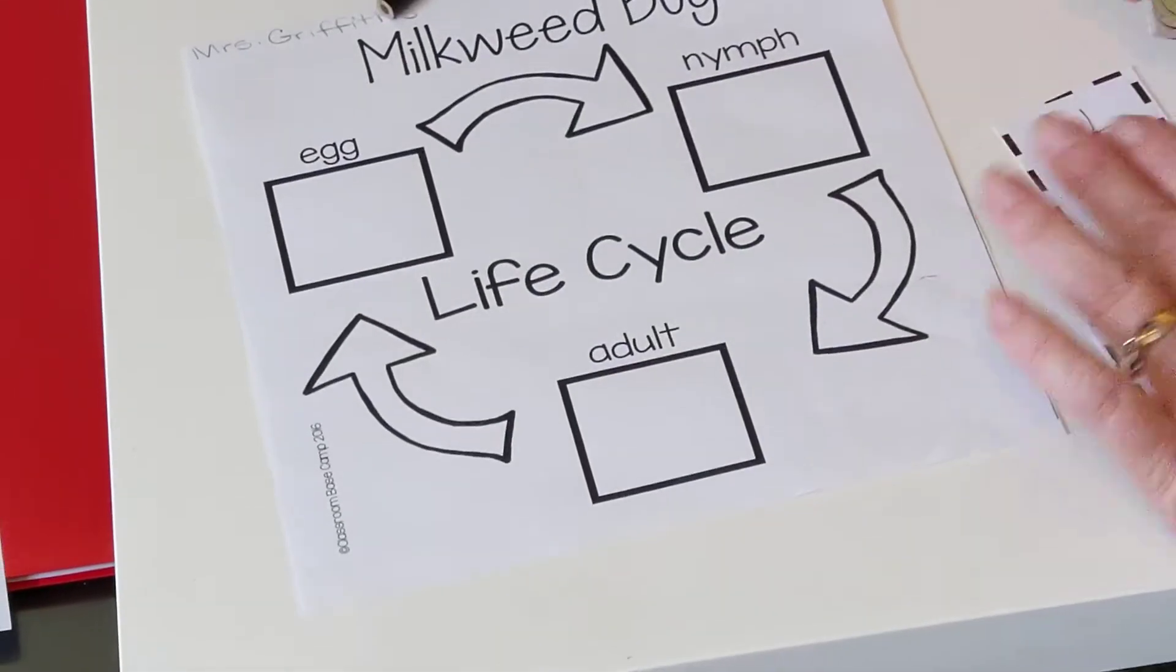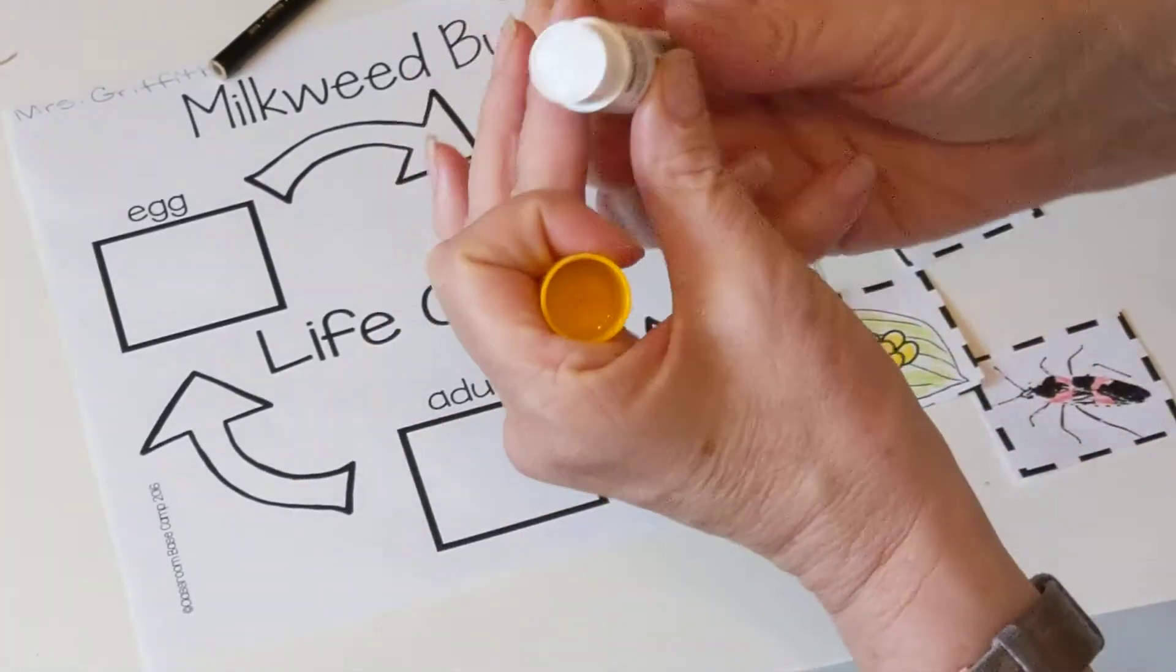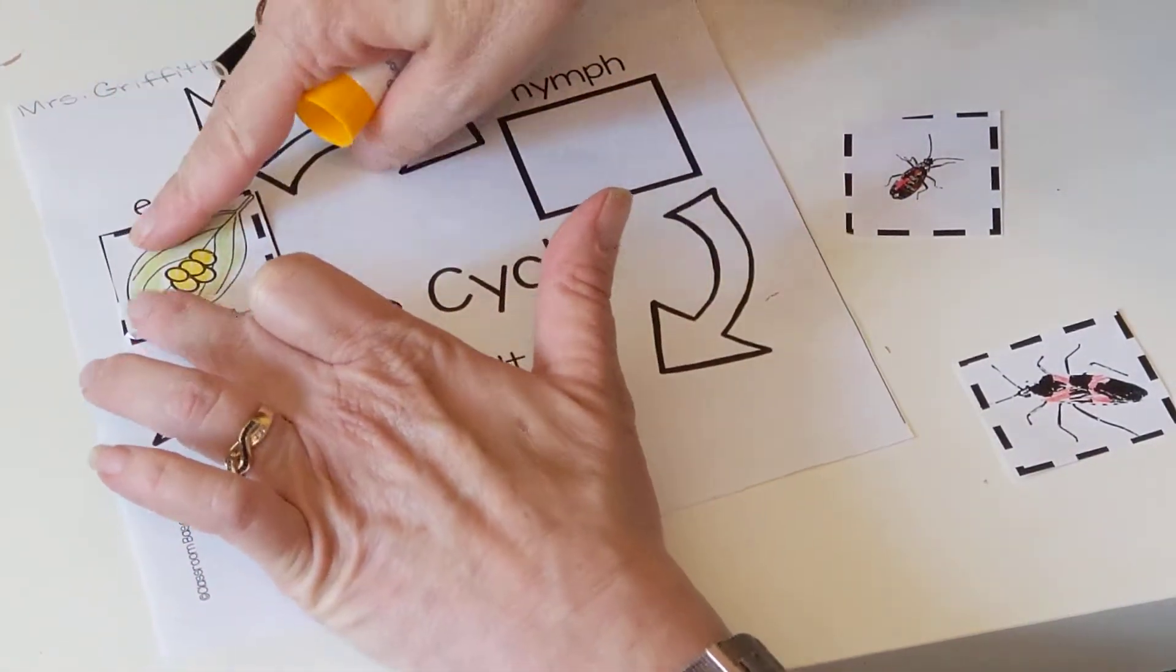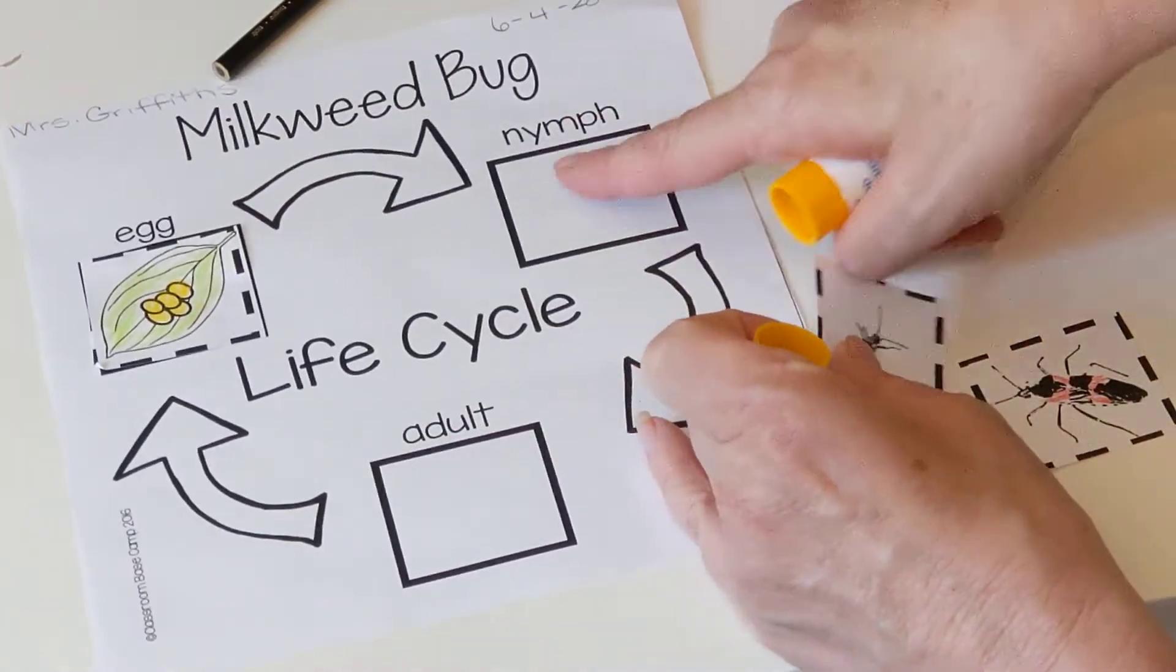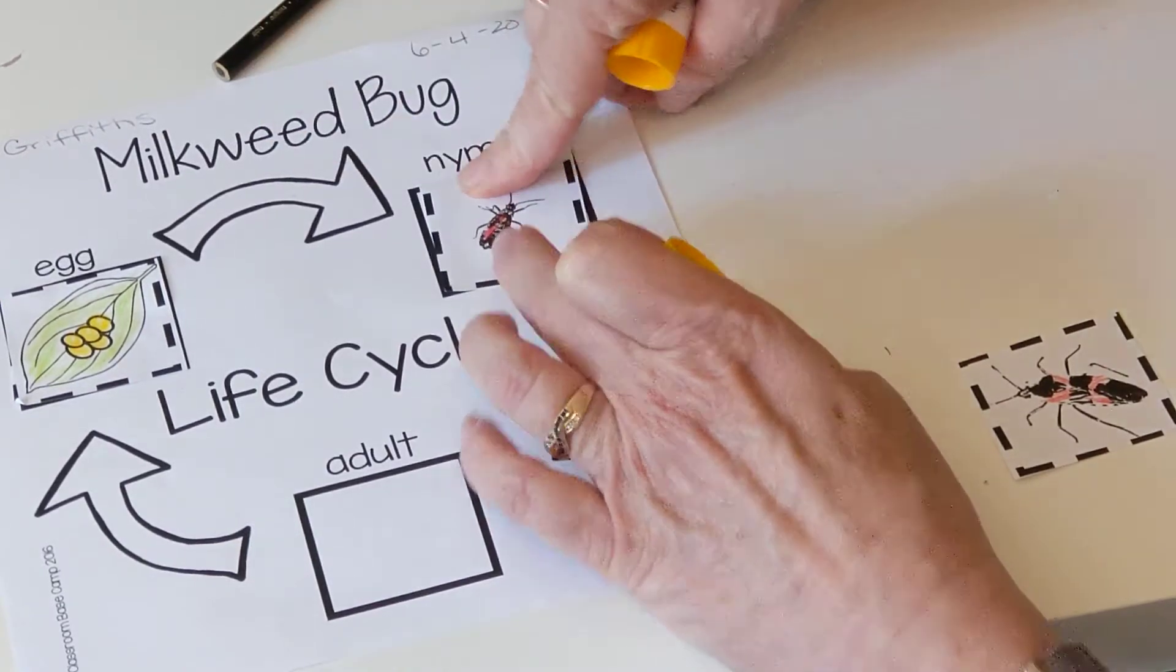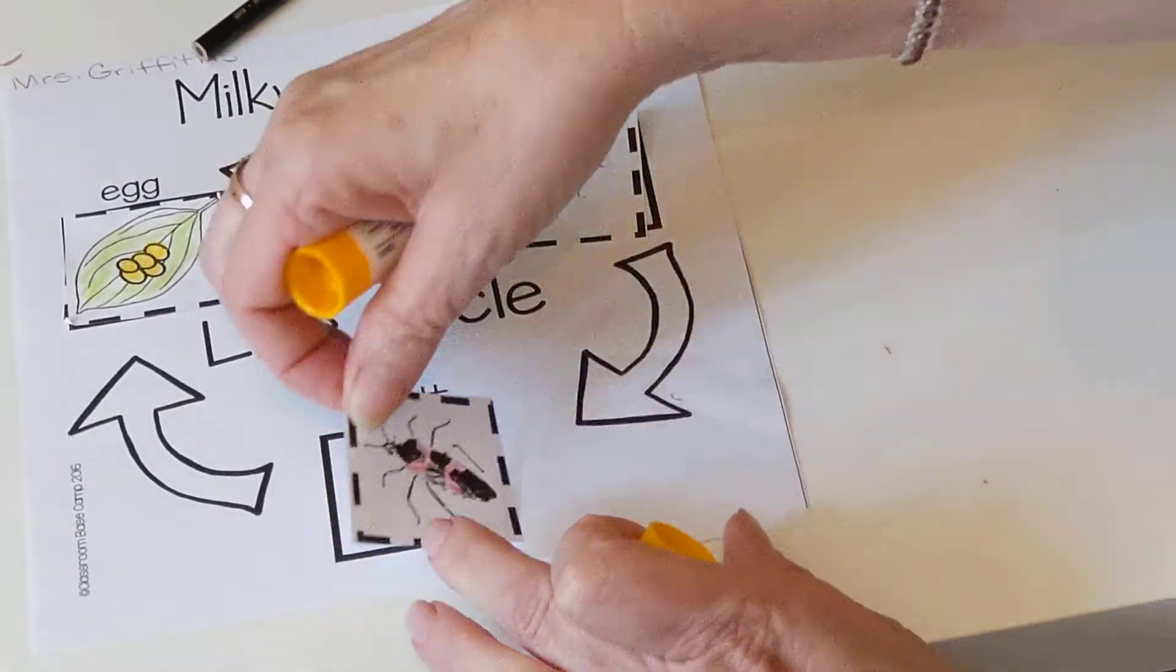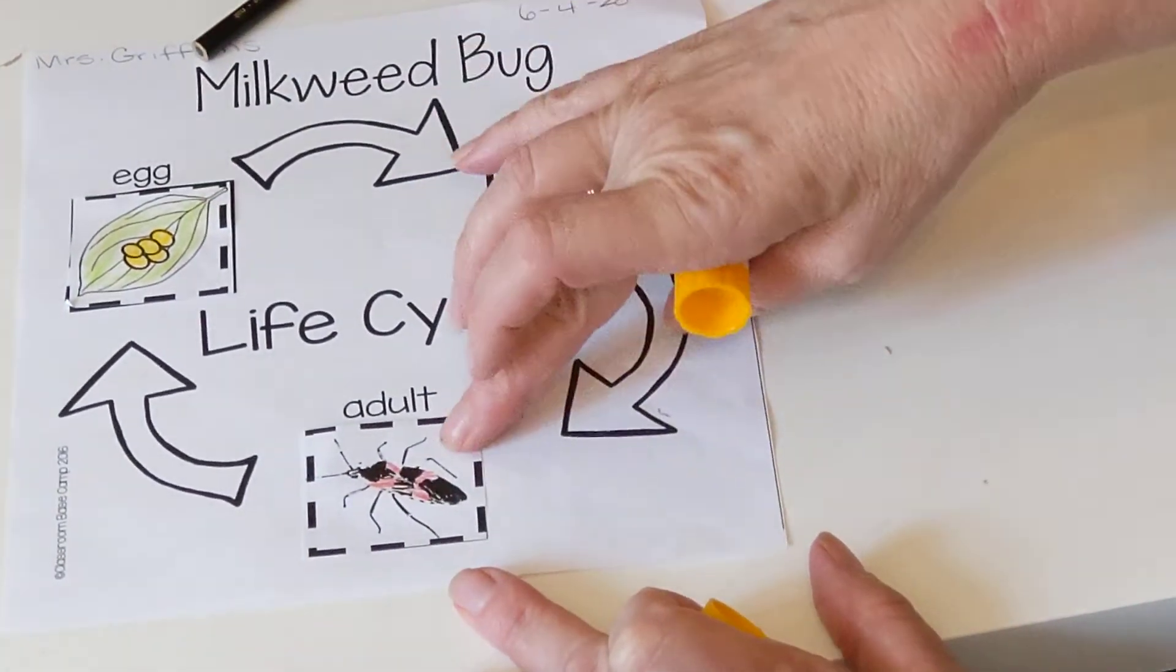I'm going to start with the egg right here on this side. So that says egg. So I need to find my egg. And right there. See how nicely it fits right in there. And then we move along what hatches out of the egg. The nymph. The baby milkweed bug. That goes right there. And then he grows into, or he or she grows into an adult milkweed bug. So egg, nymph, adult.